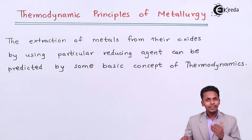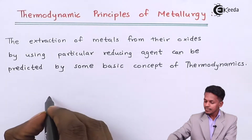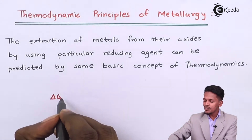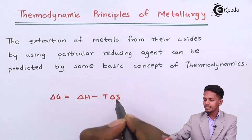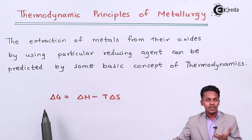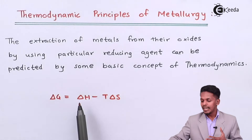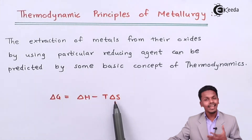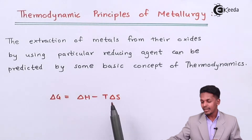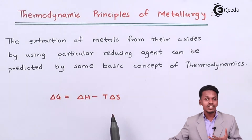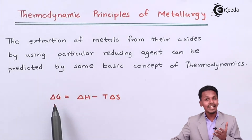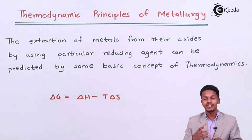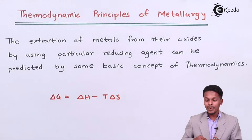The formula is: delta G equals delta H minus T times delta S, where delta G is the Gibbs free energy, delta H is the change in enthalpy, T is the temperature, and delta S is the entropy. It is the delta G which decides whether the reaction is spontaneous or not.